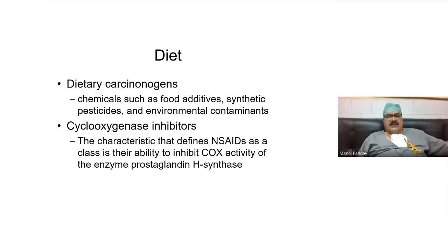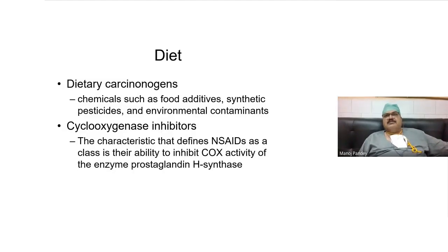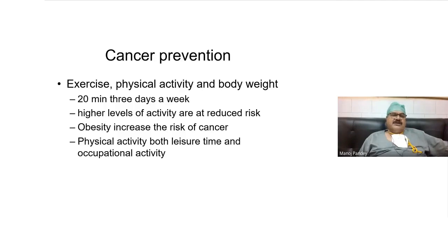One preventive agent used is COX inhibitors. COX inhibitors basically inhibit the activity of the enzyme prostaglandin synthase and have been found to have chemopreventive action. Drugs like aspirin and celecoxib have been used for chemoprevention programs, but none of them are approved as chemopreventive agents.